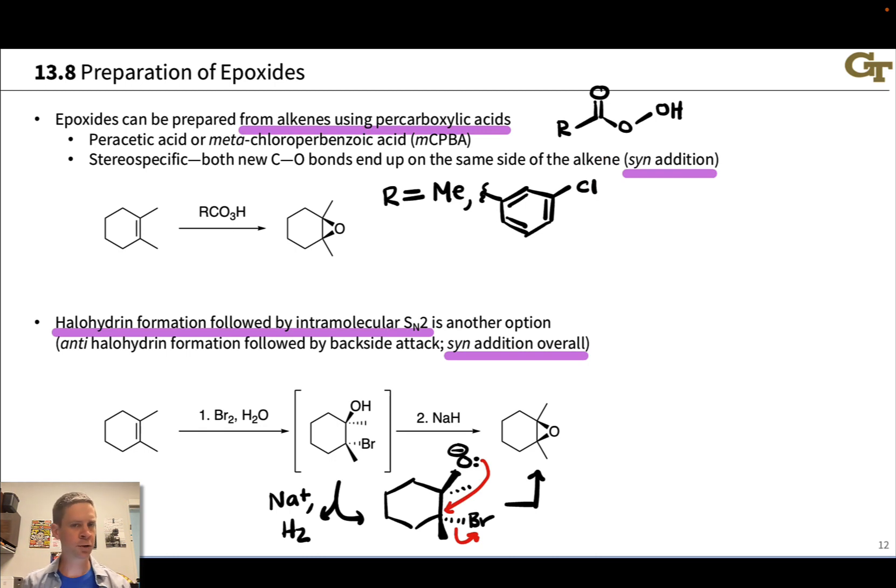And there are two percarboxylic acids that are commonly used. There's MCPBA, meta-chloroperbenzoic acid, or peracetic acid. And it's a stereospecific reaction as we just mentioned. So if I start with, for example, these two methyl groups cis in the starting alkene, the two methyl groups will remain cis in the product.